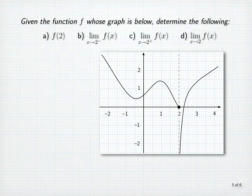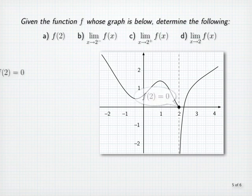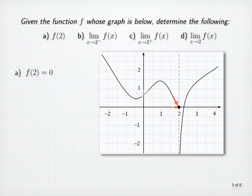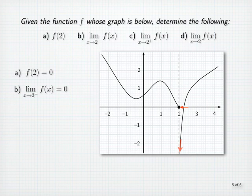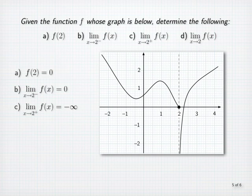This example is similar to the previous one. Given the function graphed here, we'd like to determine: a, the value of the function at 2; b, the limit as x approaches 2 from the left; c, the limit as x approaches 2 from the right; and d, the limit as x approaches 2. f of 2 is equal to 0 because the point 2, 0 is on the graph. As x approaches 2 from the left, the corresponding function values are approaching 0, so the limit from the left equals 0. As x approaches 2 from the right, function values are negative and getting larger and larger in magnitude, so the limit from the right is negative infinity. Because the two one-sided limits do not agree, the limit as x approaches 2 of f of x does not exist.